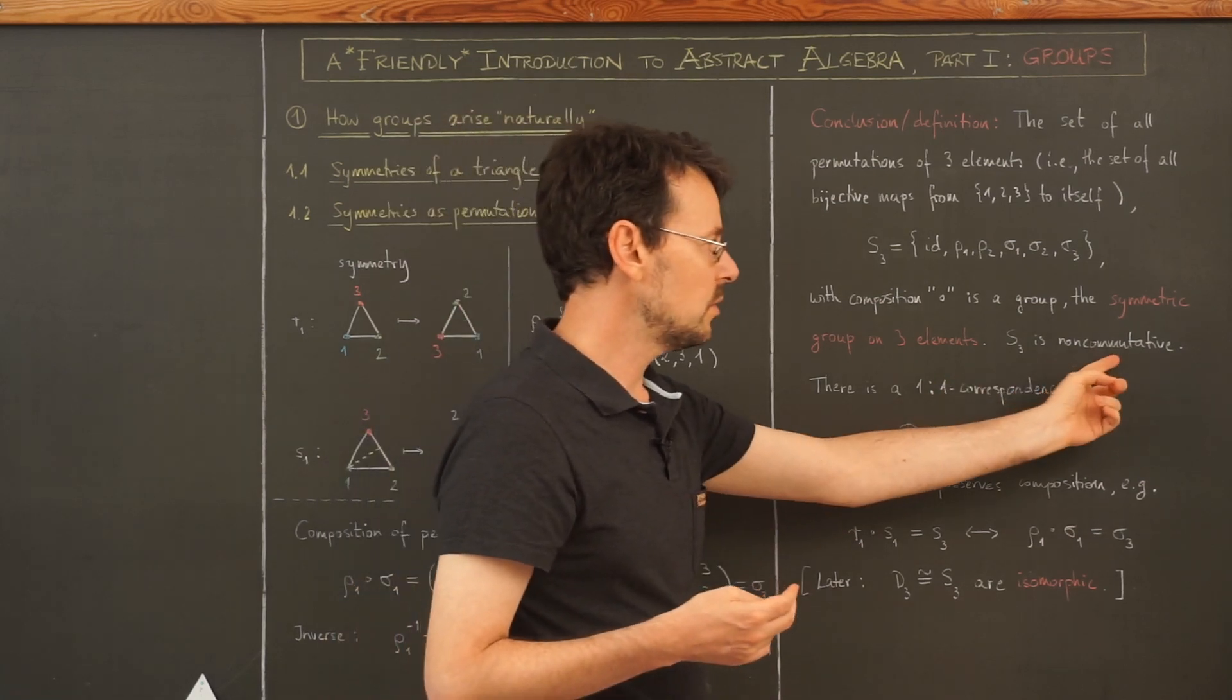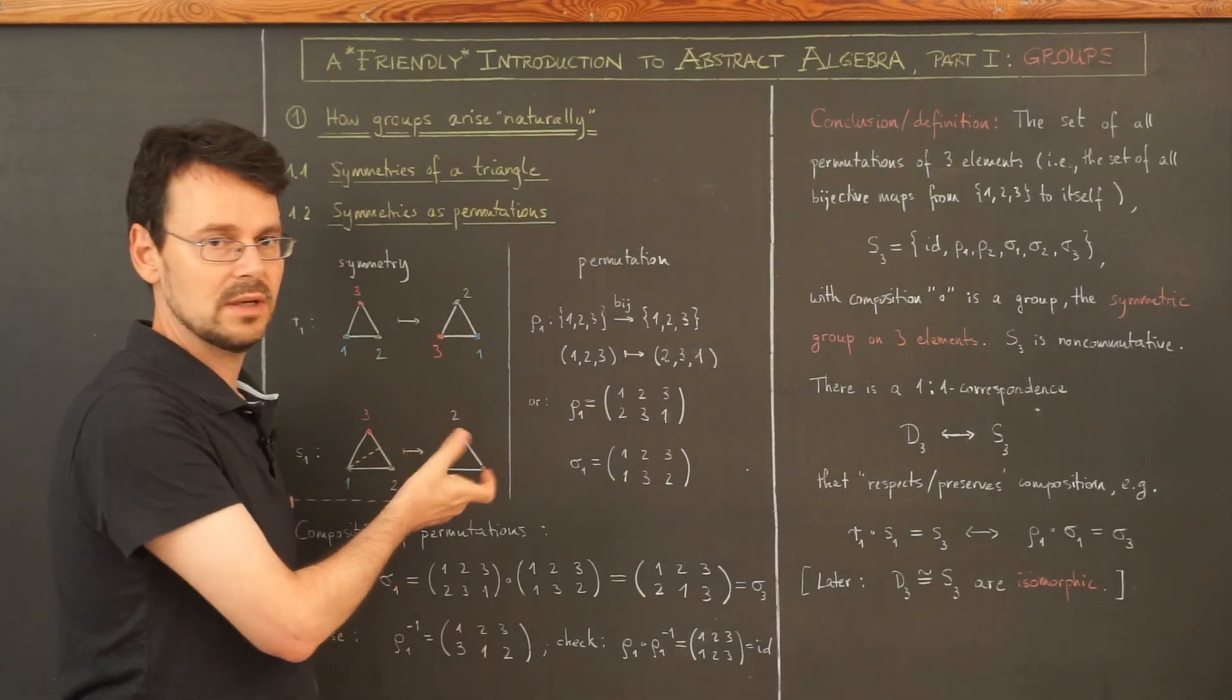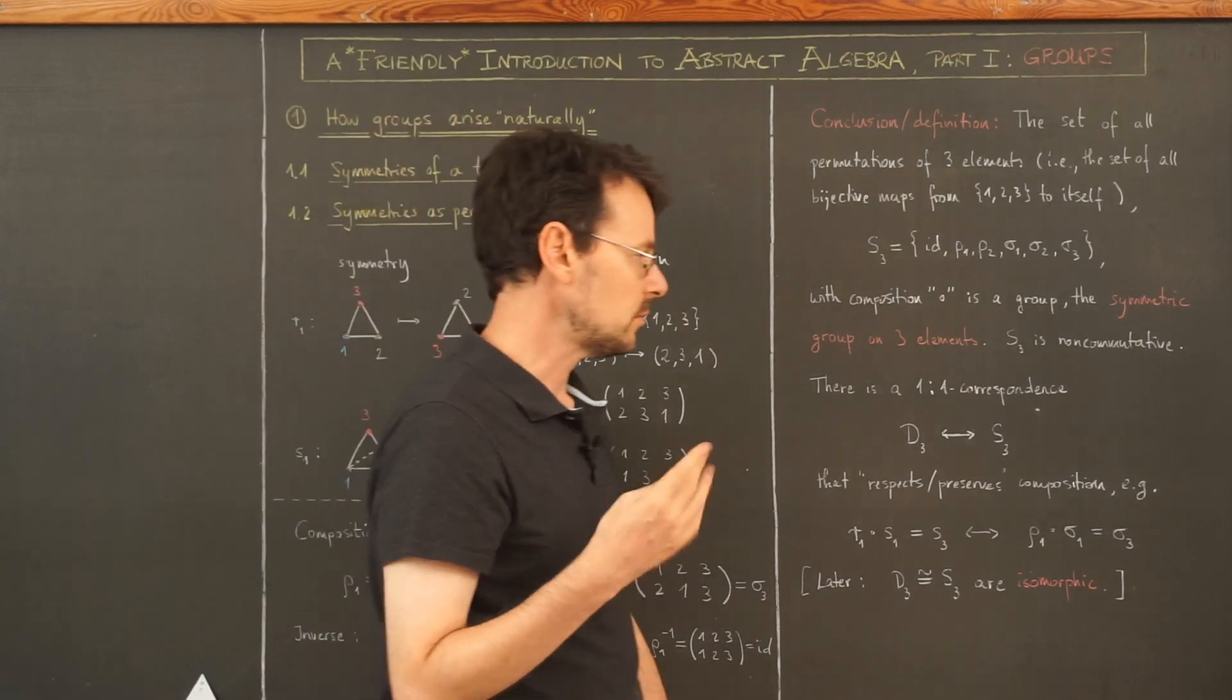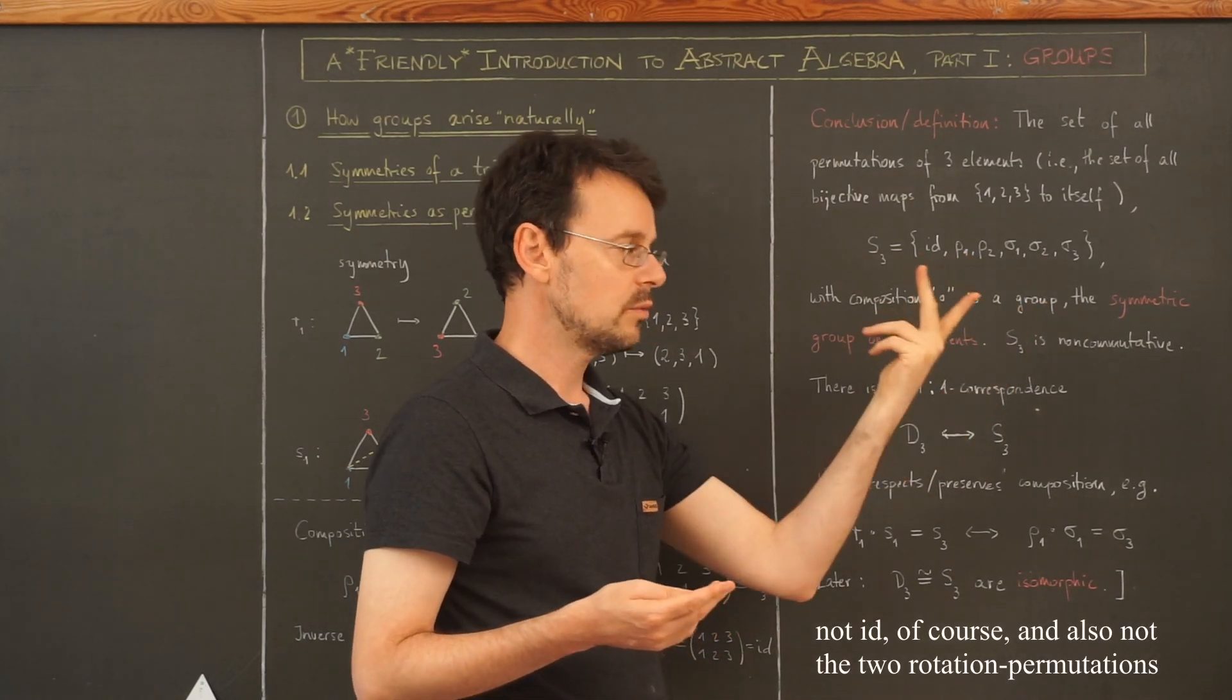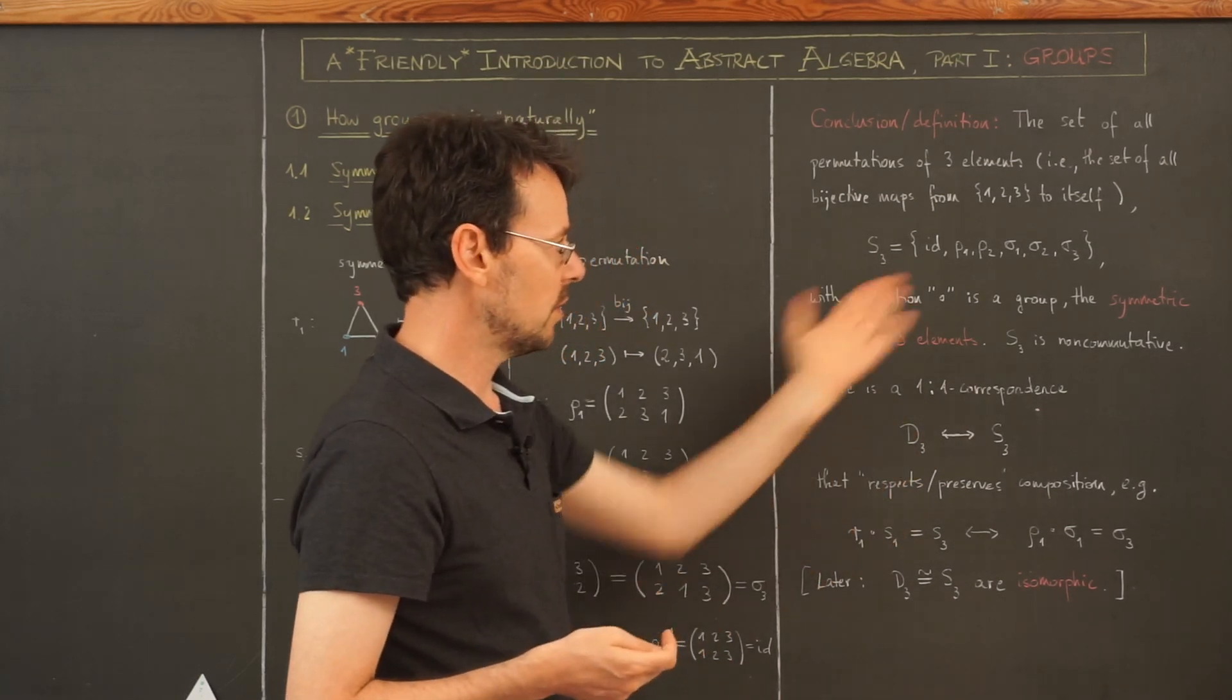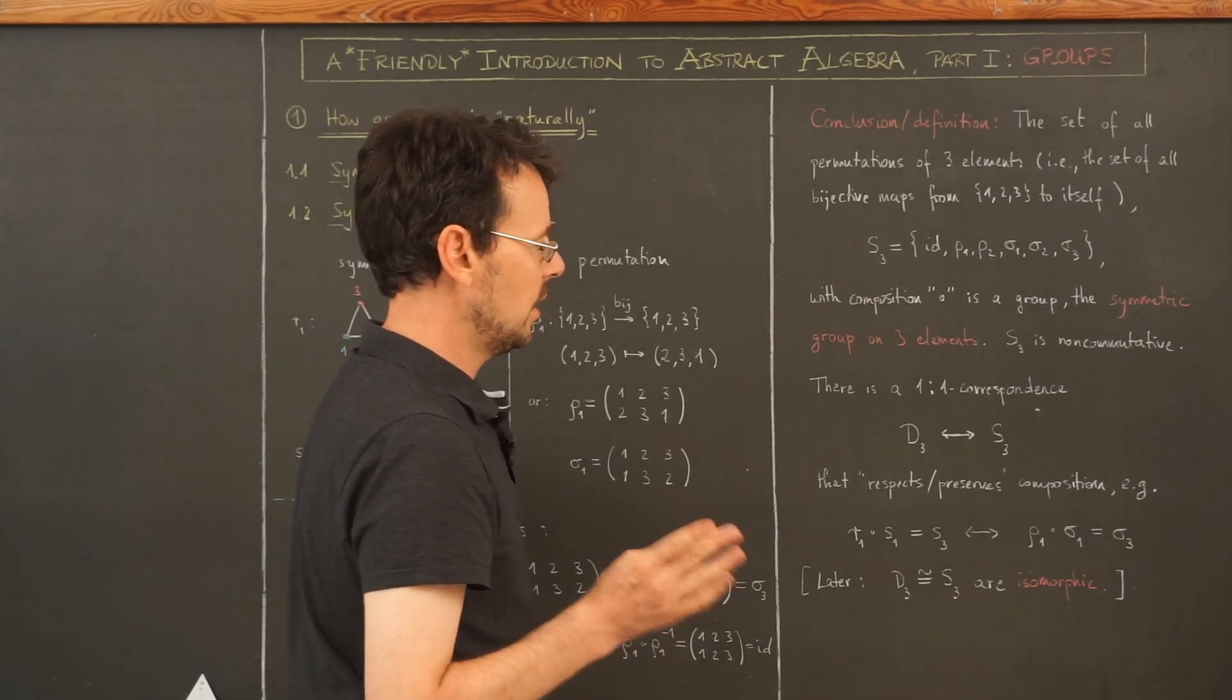This set together with composition is a group. It is, of course, non-commutative because it is essentially the same as the group of these symmetries. And for those we already know they are not commutative. A good exercise for you would be to actually take two elements, compose them in two different orders and find out if they commute or not. And you will find elements that do not commute.